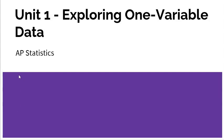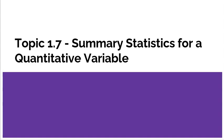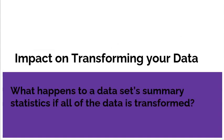We are back in unit one exploring one variable data. We are in the third part of 1.7, summary statistics for a quantitative variable. This part's definitely shorter than the others, but super important. Here we're going to talk about the impact of transforming your data. So what happens to a data set's summary statistics if all the data is transformed?